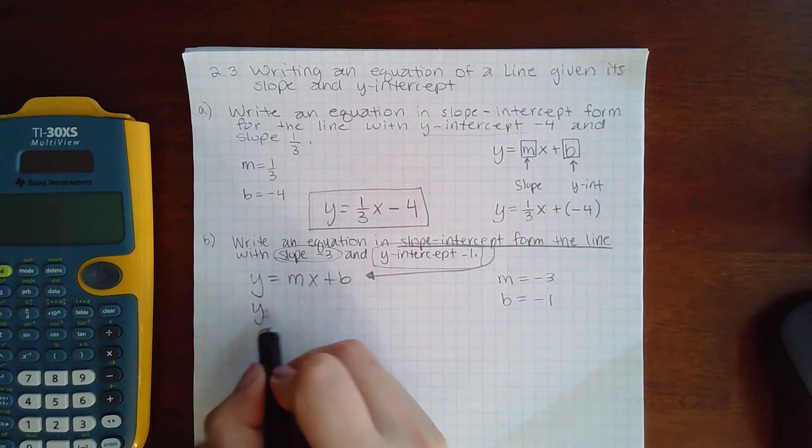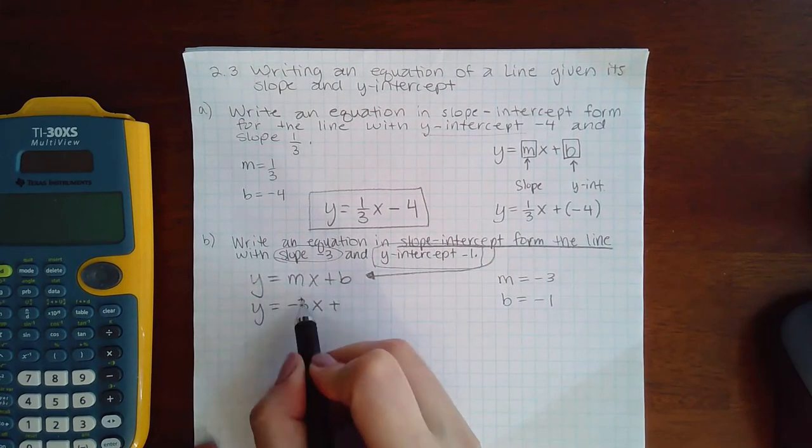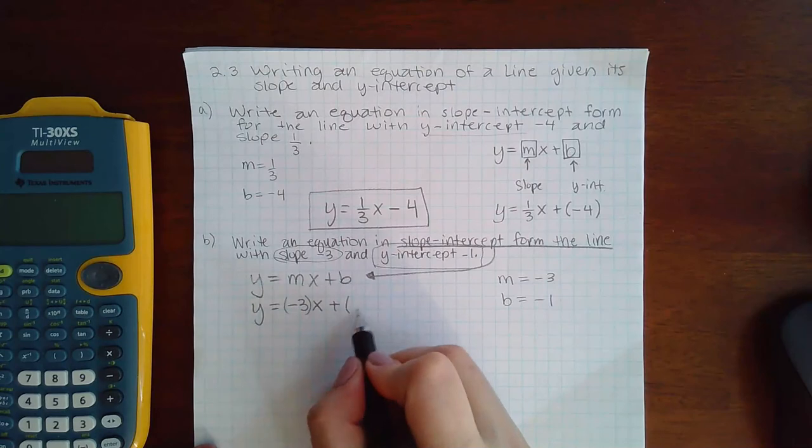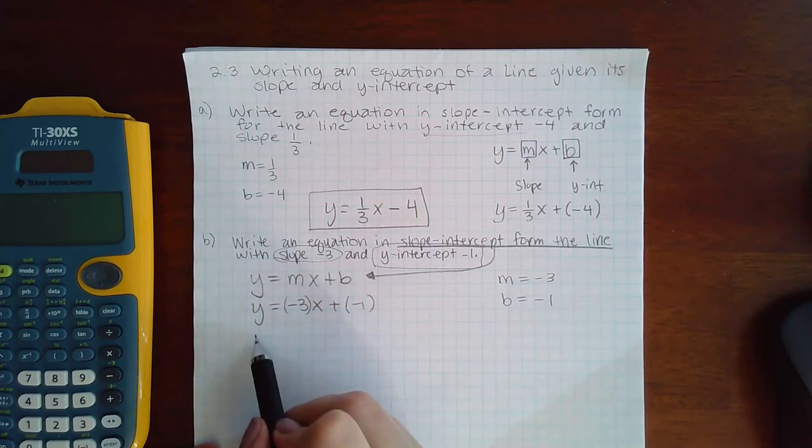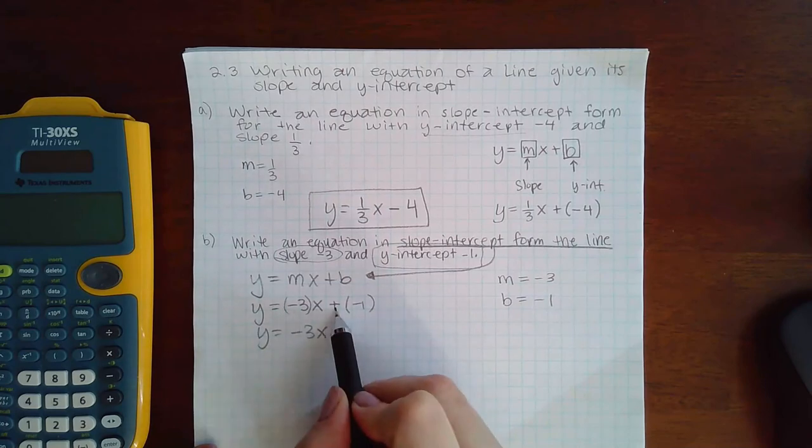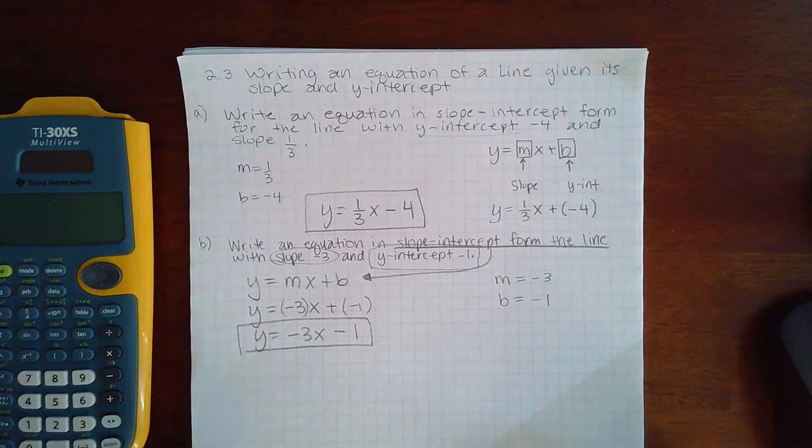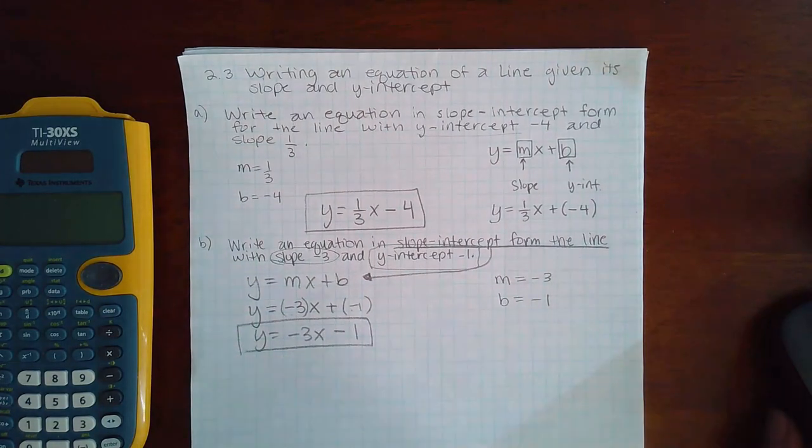Now it's just a matter of plugging in those numbers exactly where they go. You could use parentheses when you plug in the value, but negative 3 times x is negative 3x, and a positive times a negative is a negative. So this is the formal version of that line in slope-intercept form.